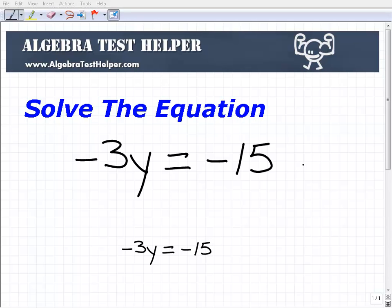Okay, let's go ahead and solve this equation here. This is negative 3y equals negative 15.